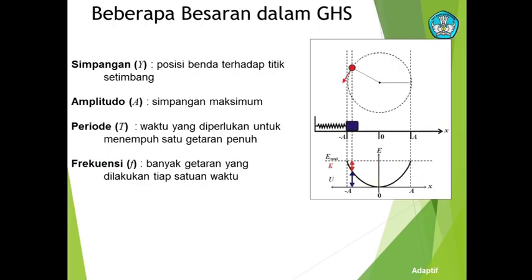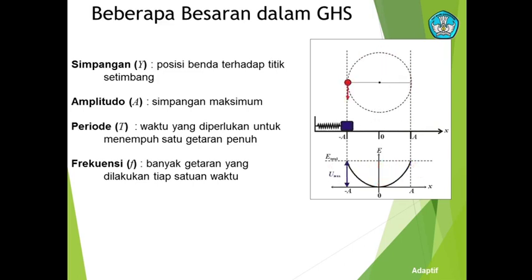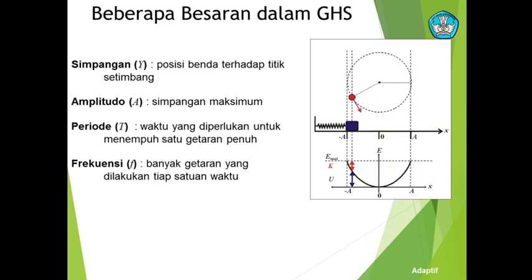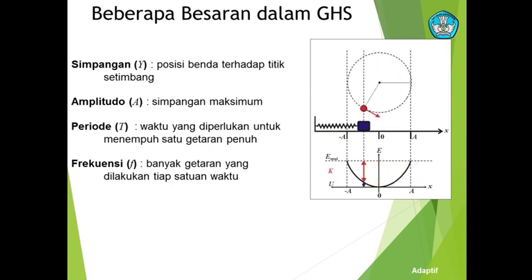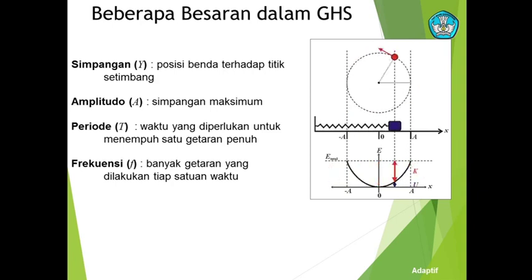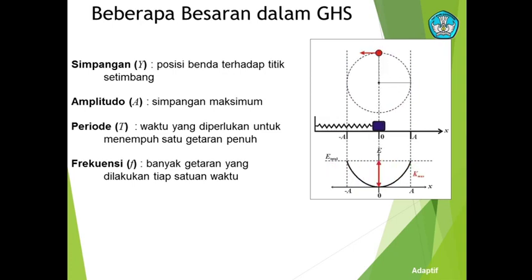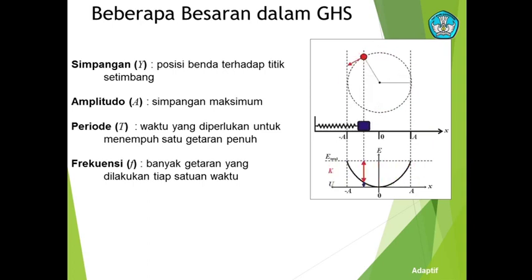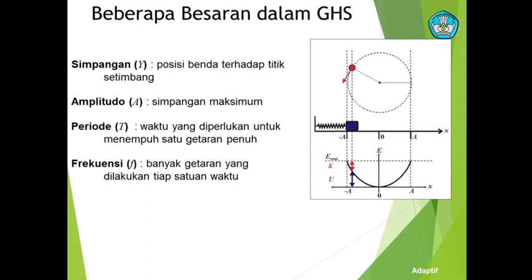Beberapa besaran dalam getaran harmonik sederhana: simpangan Y adalah posisi benda terhadap titik seimbang. Amplitudo adalah simpangan maksimum. Periode T adalah waktu yang diperlukan untuk menempuh satu getaran penuh. Dan frekuensi adalah banyaknya getaran yang dilakukan tiap satu satuan waktu. Getaran yang berulang-ulang dalam waktu yang lama dianggap konstan atau sama.